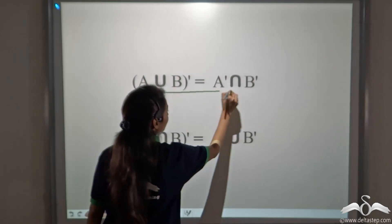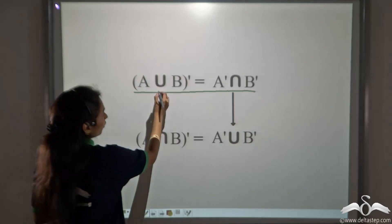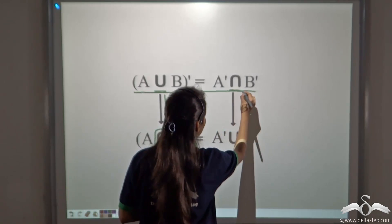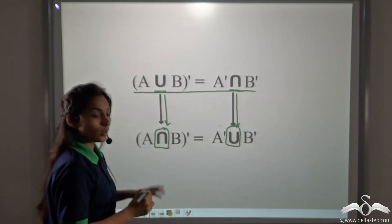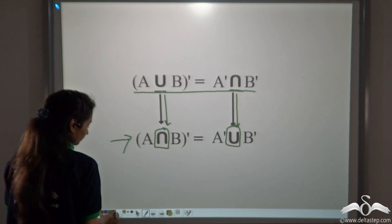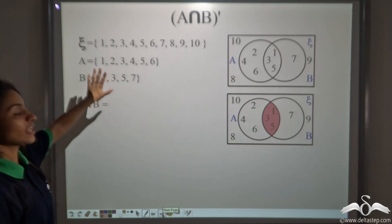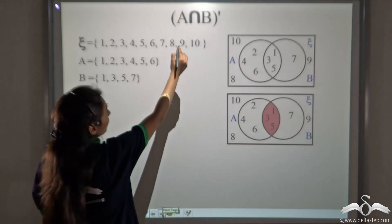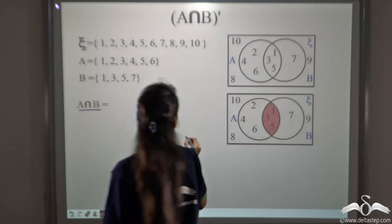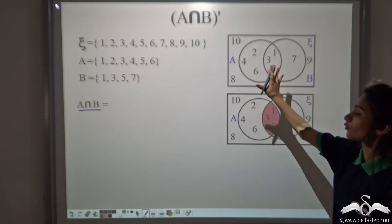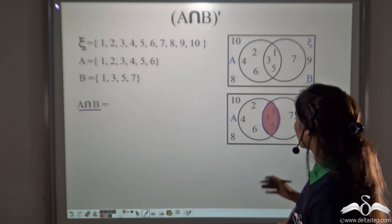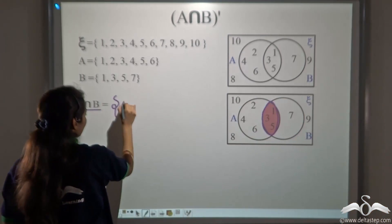We are already familiar with the first expression we just solved. Now, what if we replace union with intersection and replace intersection with union? Let's check if this new expression holds true. For A intersection B whole complement, we first find A intersection B — the overlapping part of A and B — which gives us 1, 3 and 5.